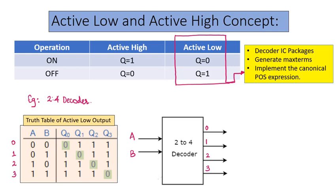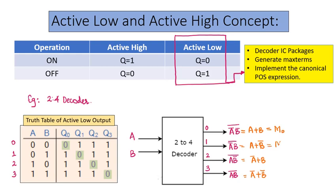This is an example of an active low case for a 2-to-4 decoder, with the decoder diagram drawn. We take the complement of the output function and represent the expression in terms of max terms. For example, the complement of A-bar·B-bar equals A+B, which is the max term M0, followed by M1, M2, and M3. These max terms implement the canonical POS expression.